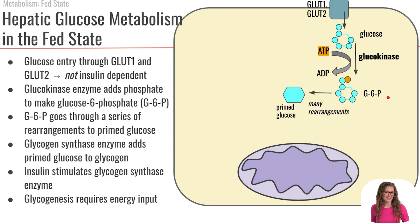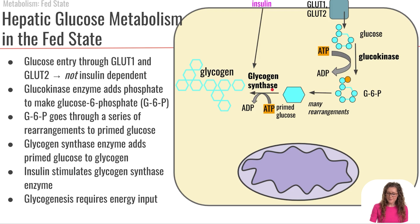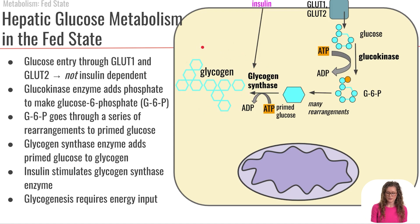In the presence of insulin, because we're in the fed state, that glucose-6-phosphate is going to undergo a few rearrangements to become something called primed glucose. Primed glucose can then undergo a chemical reaction catalyzed by the enzyme glycogen synthase to bind it together and form glycogen. Glycogen synthase is responsible for glycogenesis, and insulin stimulates it. This process requires an ATP investment, making it an anabolic, or building, reaction.